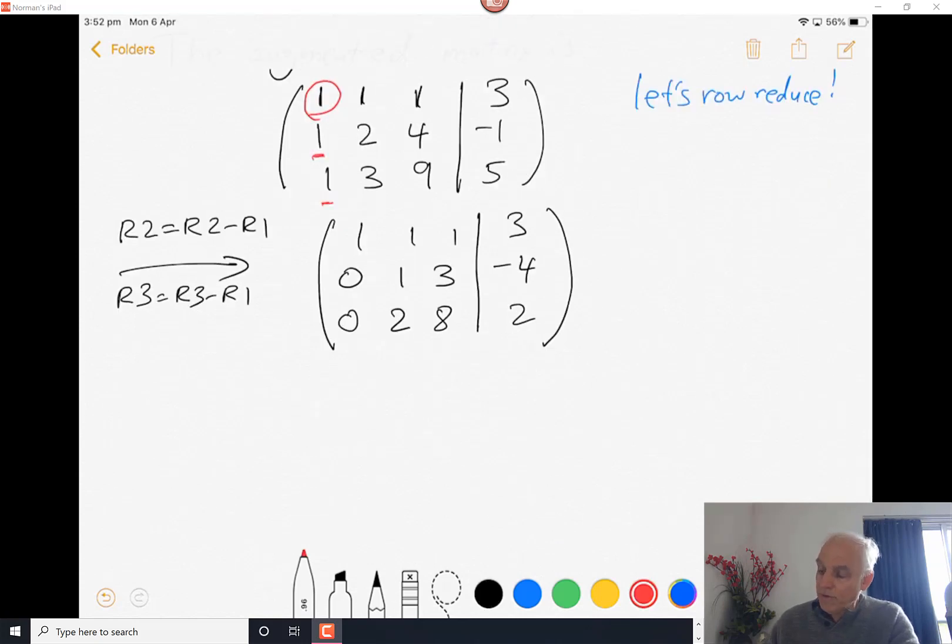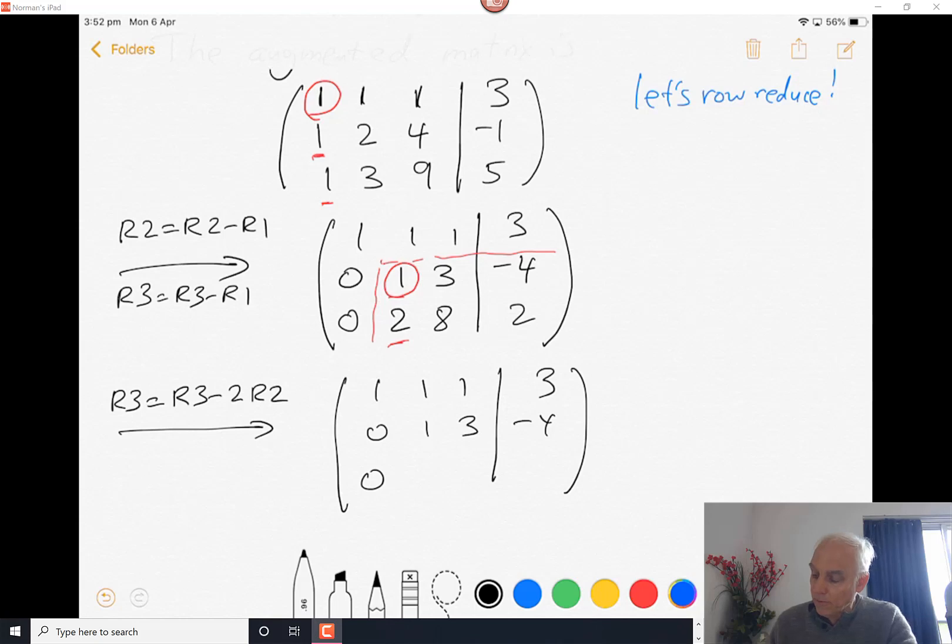Now we're going to move to this lower matrix down here, perform the same kind of thing. We identify a pivot entry there and use that to get rid of the 2 below. So we're going to have a new row 3 which is the old row 3 minus 2 times row 2. Row 1 stays where it is, row 2 stays where it is, and we're taking row 3 minus 2 times row 2. So 2 minus 2 is 0, 8 minus 6 is 2, and 2 minus twice minus 4 is 2 plus 8, that'll be 10.